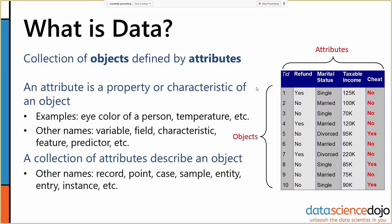One struggle people have getting into data science is that it synthesizes three or four completely distinct fields, so there are many different terms for the same things. 'Attribute' is one name, but these are also called variables, fields, characteristics, features, predictors, and columns. All of those different names refer to essentially the same thing — a property or characteristic of an object.